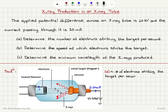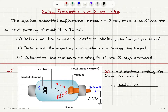Let's start with Part A. We want to determine the number of electrons N. This N can be calculated by looking at the total charge that is striking the target per second. If we divide this total charge by the electron charge, then we would be finding the number of electrons striking the target per second.